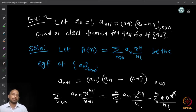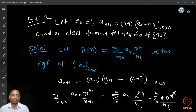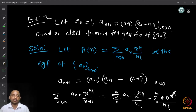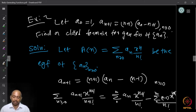Multiplying the recurrence aₙ₊₁ = (n+1)aₙ − (n+1) by xⁿ⁺¹/(n+1)! on both sides and summing over n ≥ 0: the left side gives ∑ aₙ₊₁ · xⁿ⁺¹/(n+1)!. On the right, the (n+1) cancels with (n+1)! giving n! in the denominator, so we get ∑ aₙ · xⁿ⁺¹/n!, and similarly ∑ n · xⁿ⁺¹/n!.